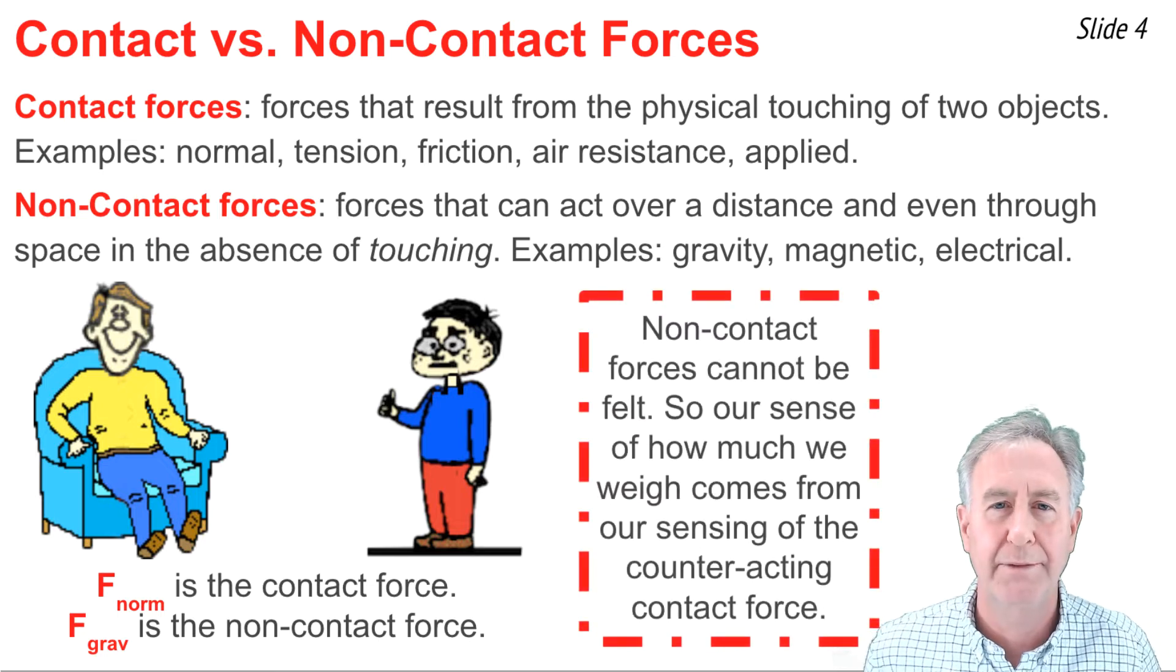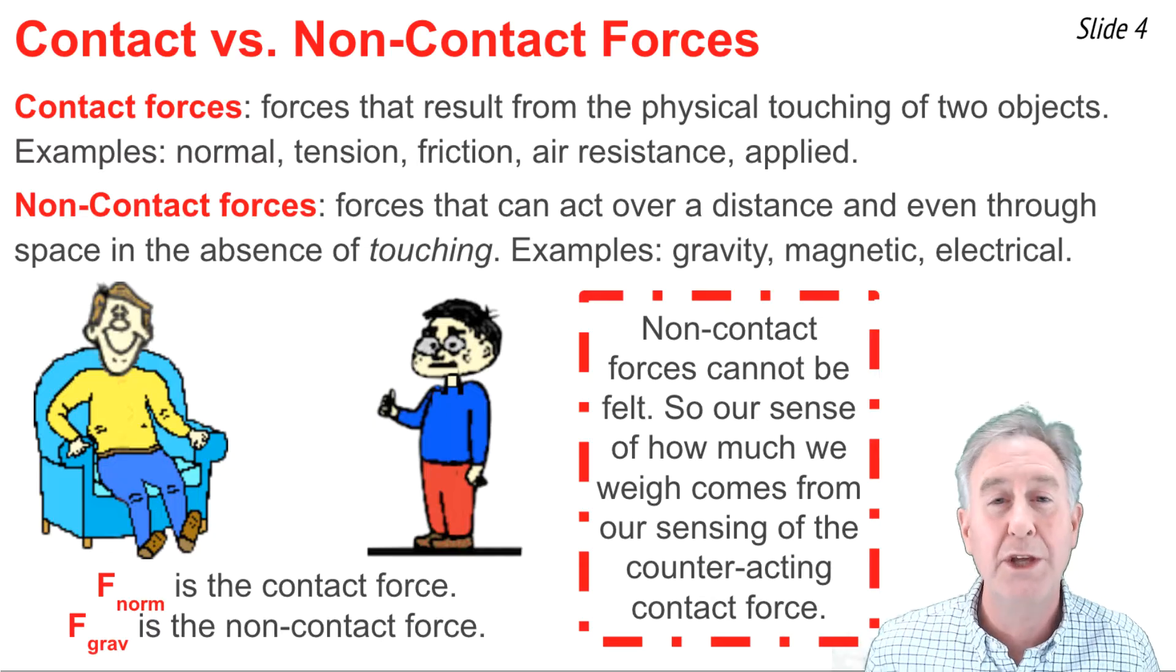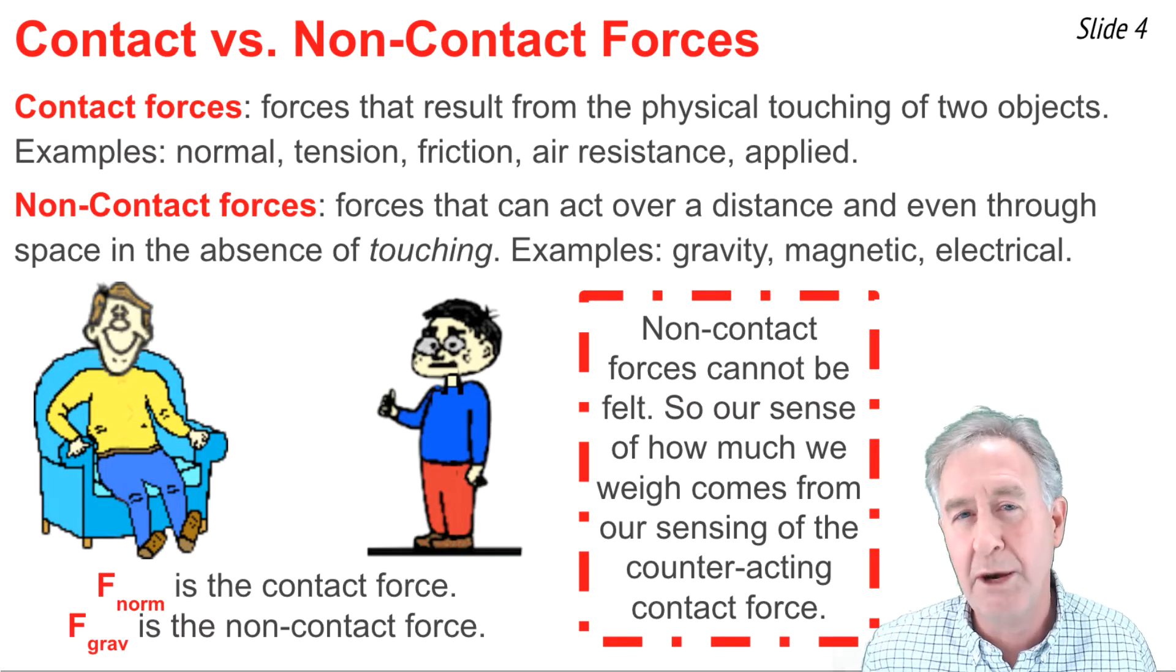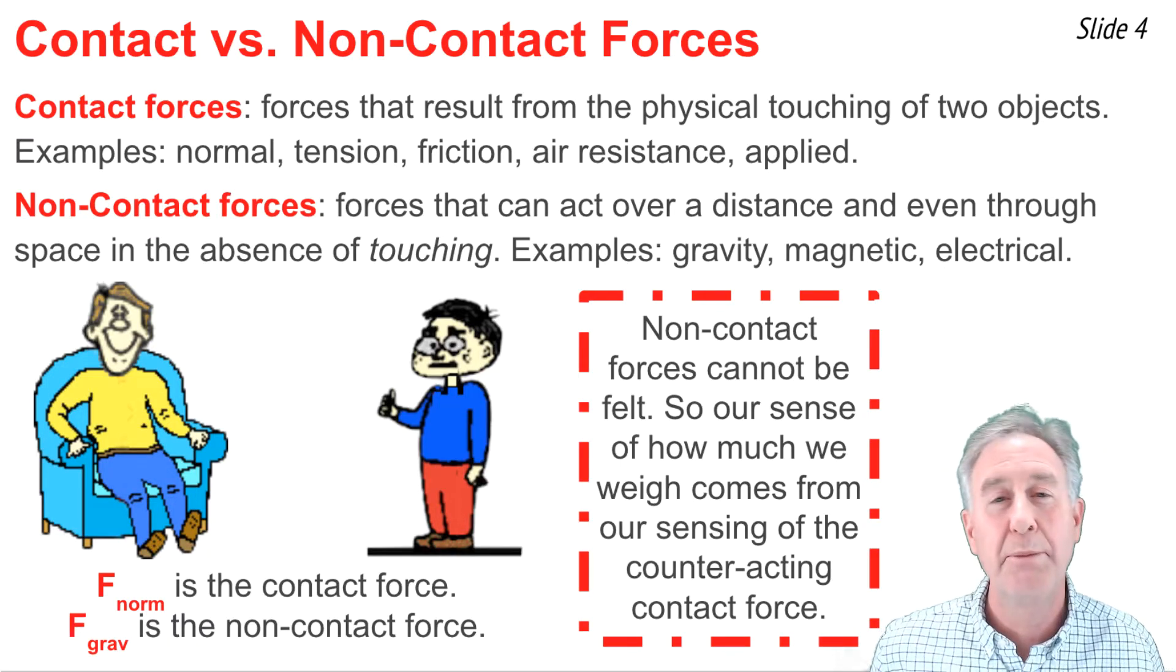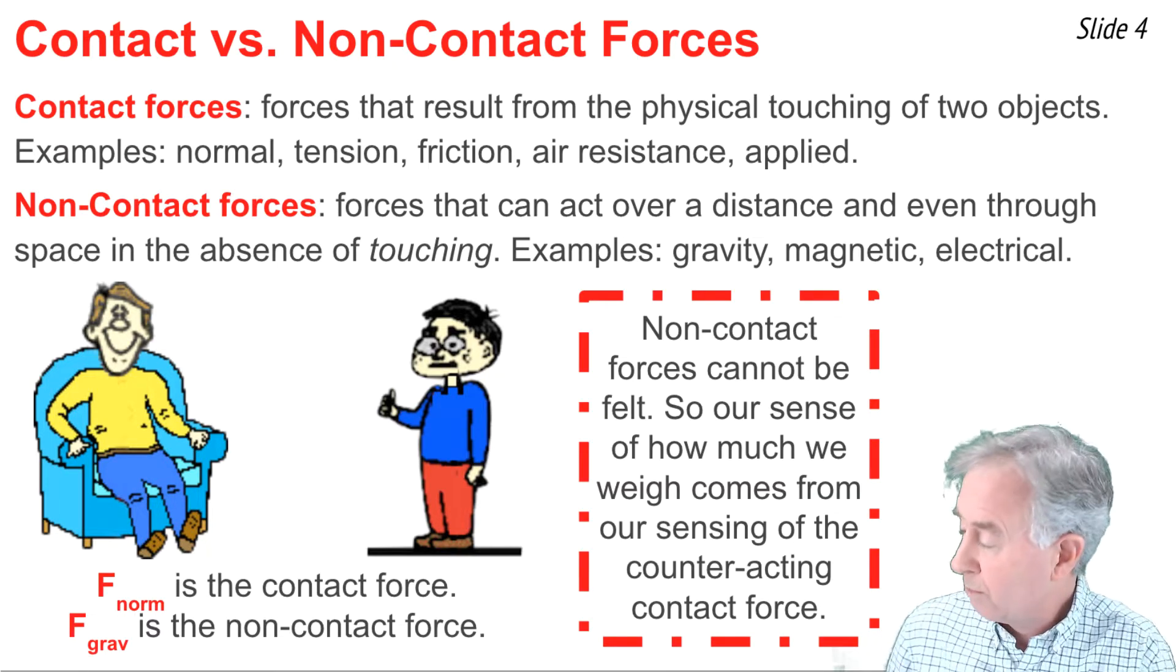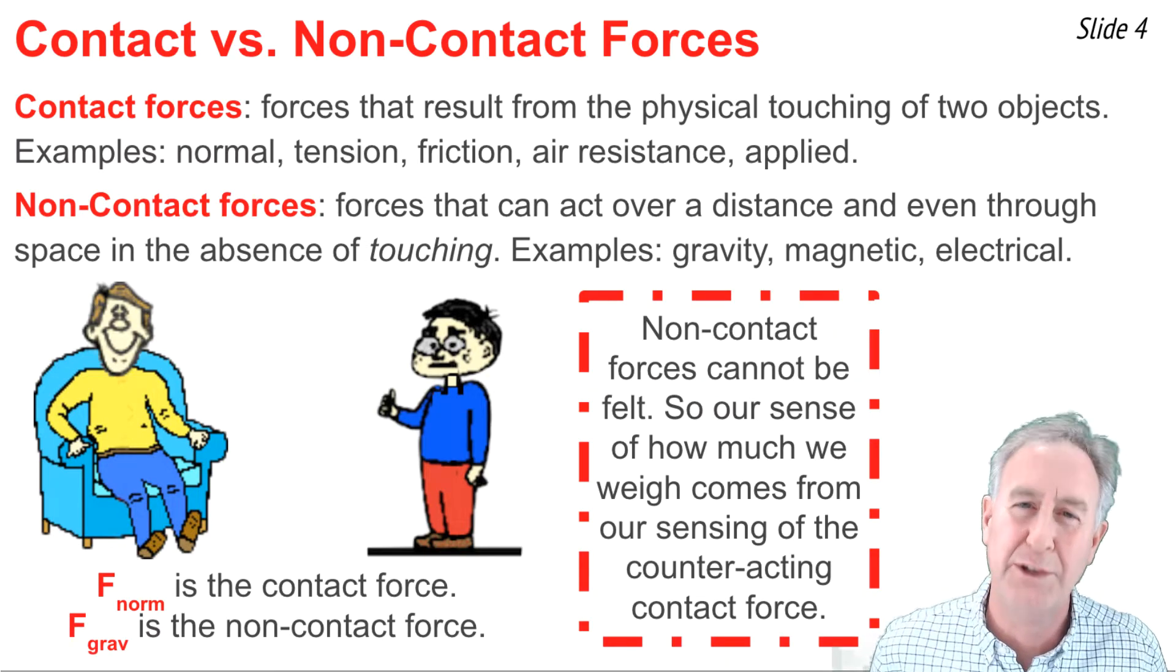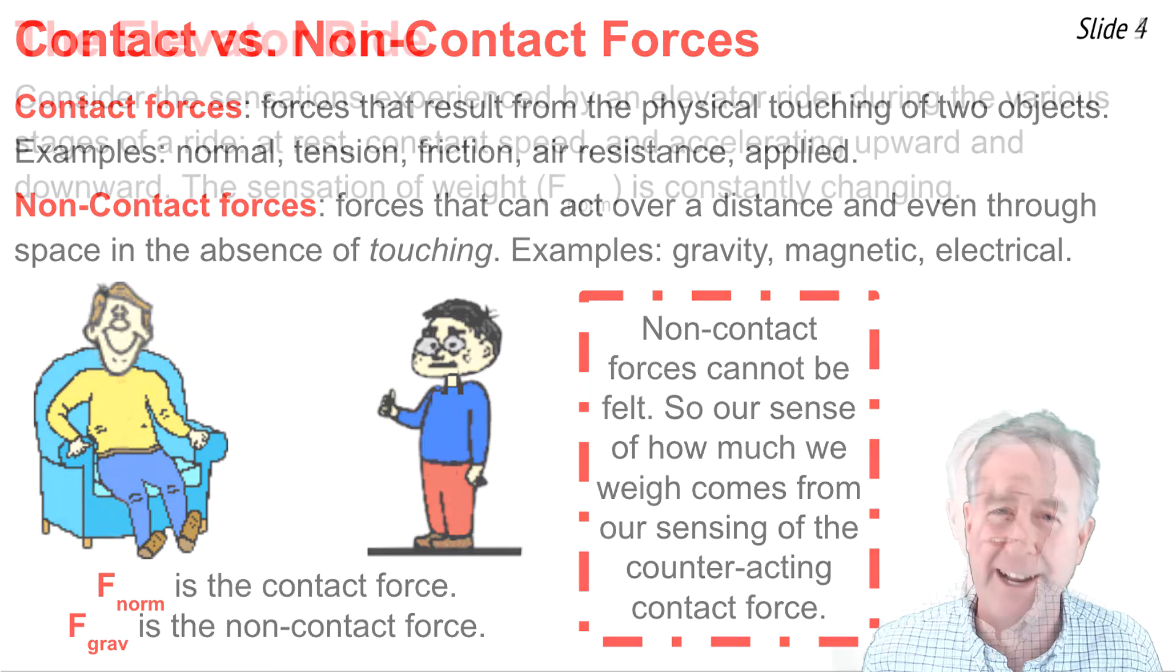Now here's the big deal. You cannot feel a non-contact force since it doesn't result from touching. You can only feel contact forces. So our sense of how much we weigh doesn't come from sensing the force of gravity, but rather sensing the contact force that counteracts the force of gravity. So the person standing on the floor that weighs 600 Newtons knows what 600 Newtons of weight feels like because they felt 600 Newtons of the contact force, the normal force, acting on their body.